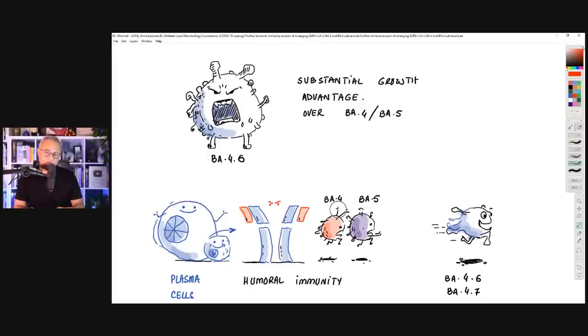Now, what happened was, this gives the BA.4 subvariants and BA.5 subvariants a substantial growth advantage over their parents. And this is why, as I showed you the CDC tracker, interestingly, the tracker is now plateauing for BA.5 at 88%. That means BA.5 is not gaining more ground. And BA.4.6 is very slowly gaining ground. Now, here is another good news. The good news is, it is assessed in some studies that the BA.4 lineage is actually less severe.